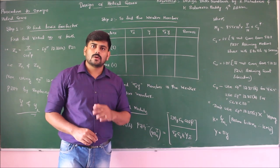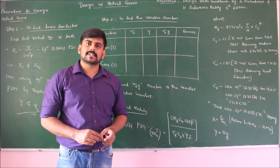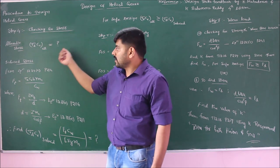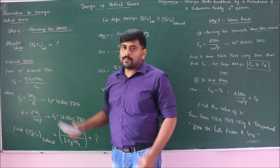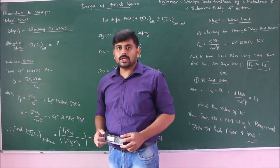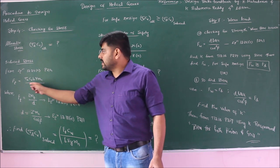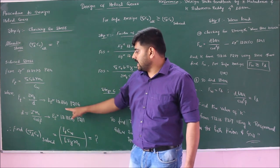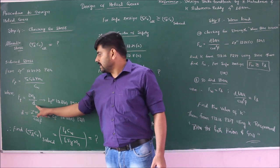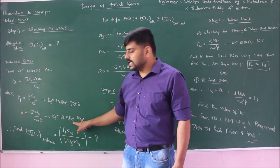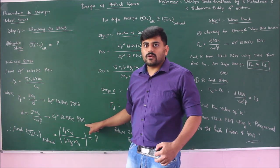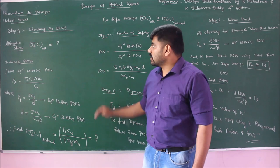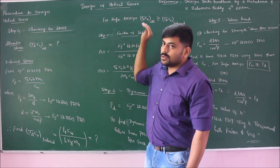Moving on to step 4 — checking for stress. The allowable stress is given by sigma_D × Cv. Find the allowable stress. To find the induced stress, from equation 12.24A, page number 214, we have the formula for tangential load. Rearrange this tangential load equation to get sigma_D·Cv induced. The tangential load value is given from equation 12.8A, page number 206. Here, D should be determined using equation 12.19E, page number 211, since we are finding the normal module. Find the value of induced stress. For the design to be safe, allowable stress must be greater than or equal to induced stress.